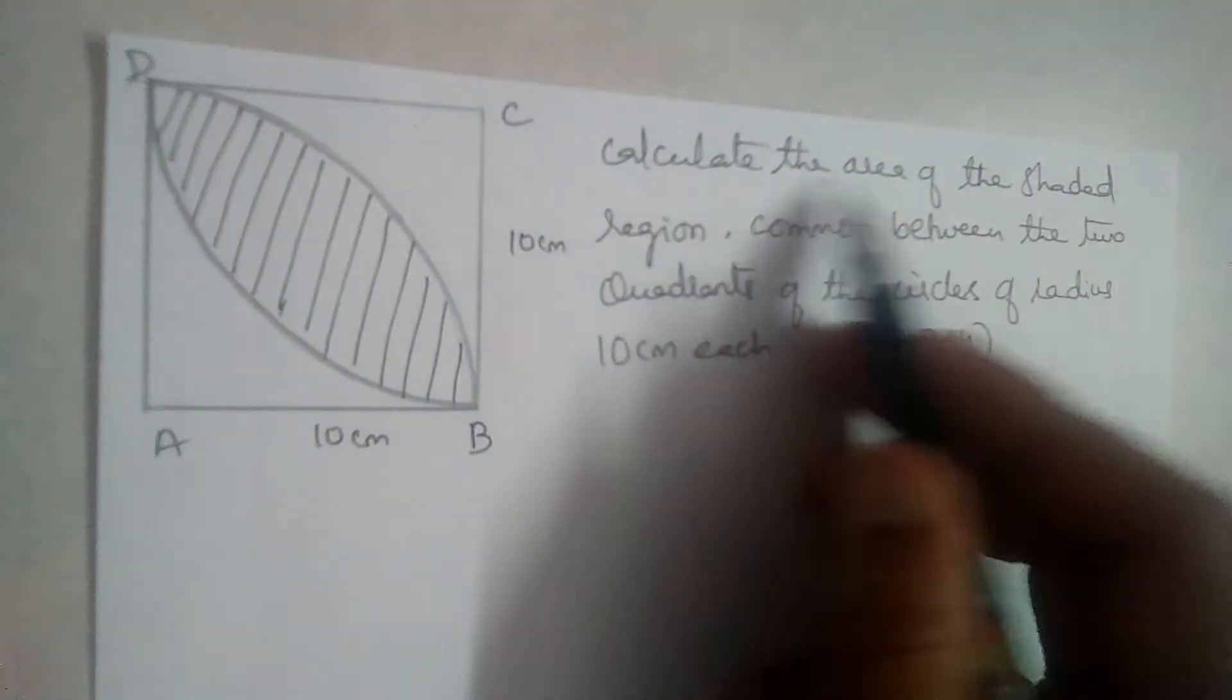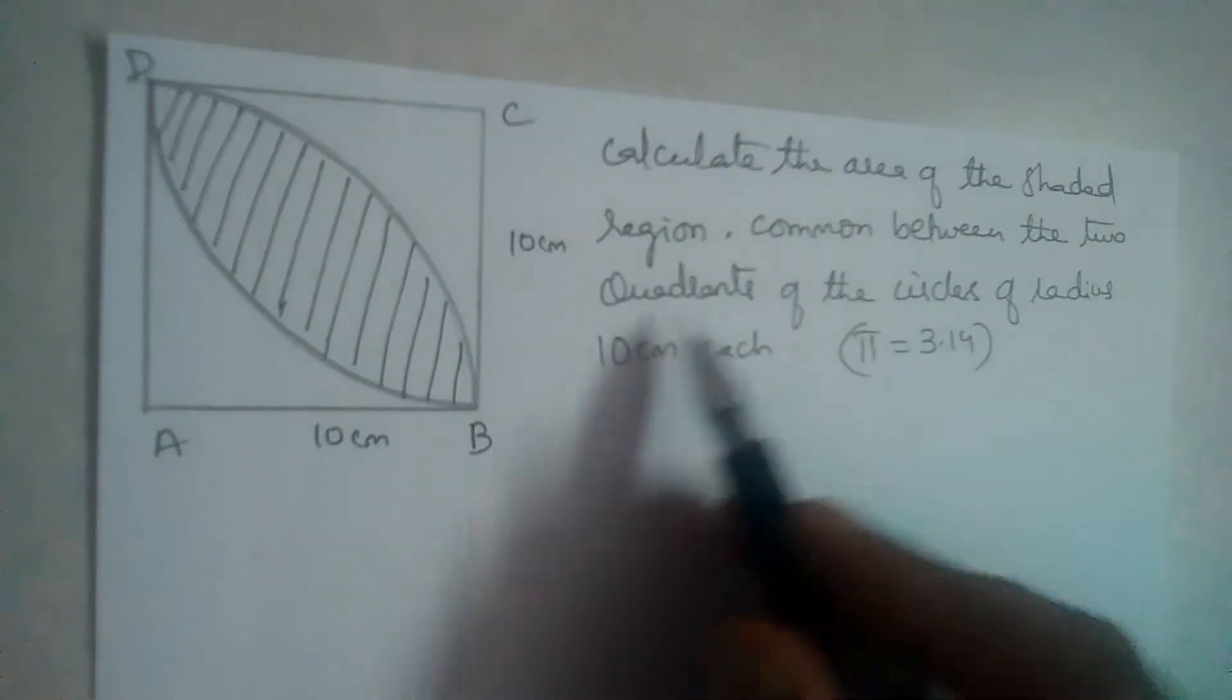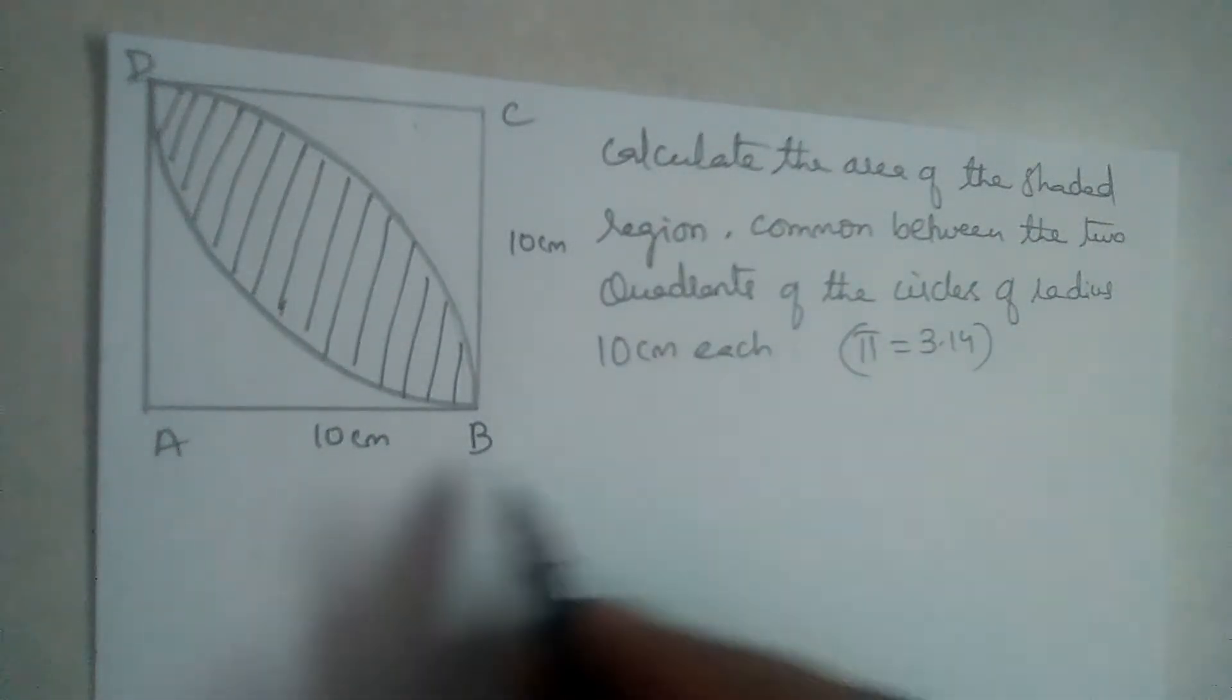Let us solve this problem. Calculate the area of shaded region common between the two quadrants of the circles of radius 10 centimeters each.